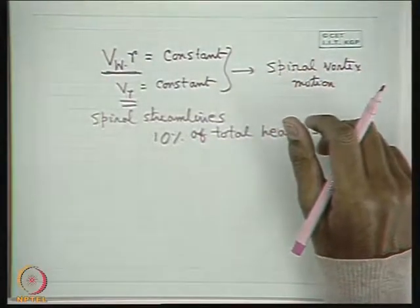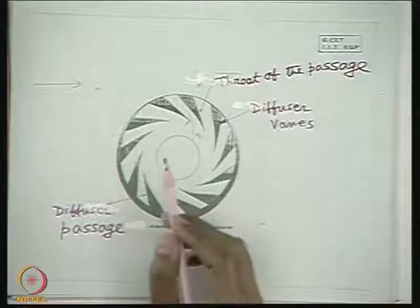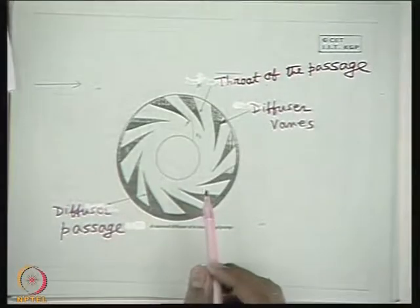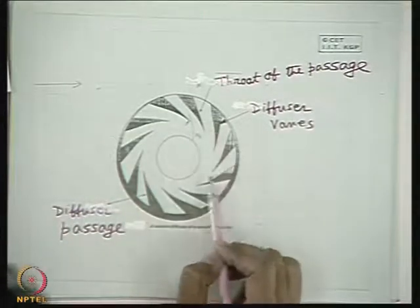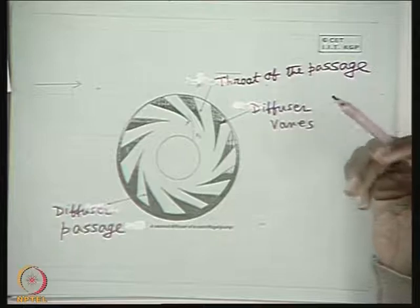Now we come to the vane diffuser. A set of static vanes act as the vane diffuser. These are provided when a shorter length of pump is required to deliver the required pressure — that is, when the rise in pressure from the impeller outlet is needed over a shorter length. The diffuser vanes act in addition to the volute casing in converting kinetic energy into pressure energy, so that we can get higher pressure at the pump outlet.